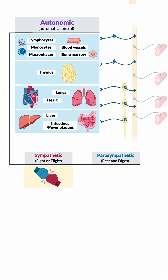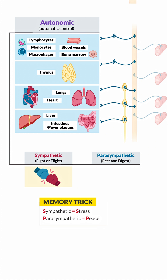The sympathetic is your fight-or-flight system. Simply think of the S in sympathetic as S for your stress. On the opposite side, the parasympathetic is your rest and digest. You can think of the parasympathetic as a P for pausing your system, or maybe even a P for pillow for resting and digesting.